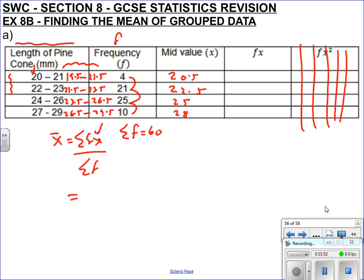Now we multiply each X by its frequency F. So 4 times 20.5 is 82; 22.5 times 21 is 472.5; 25 times 25 is 625; and 28 times 10 is 280.